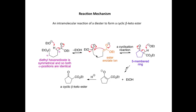Now we've got an ester enolate ion. In this step, we can get a cyclization reaction — we take the electrons from the oxygen through the carbon-carbon double bond, attack the carbonyl of the other ester, pushing our electrons up onto the oxygen, then back down again, kicking out OEt minus as a leaving group. This reaction leads to the formation of this five-membered ring.